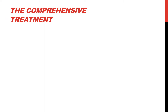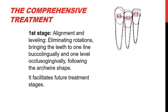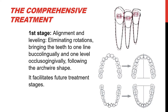Comprehensive orthodontic treatment involves three stages. The first stage is alignment and leveling, during which there will be elimination of rotations, bringing the teeth to one line buccolingually and one level occlusogingvally, following the arch wire shape. This stage facilitates future treatment stages.